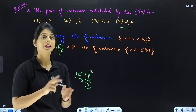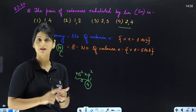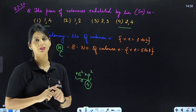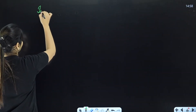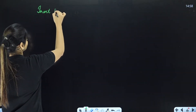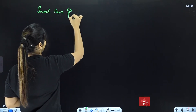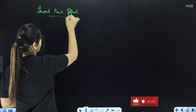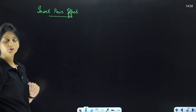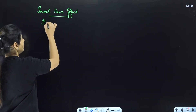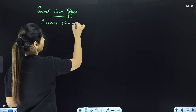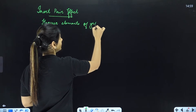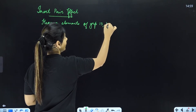Now, a very good concept is applied to select the second valence. That concept is called the inert pair effect. When does the inert pair effect apply? The inert pair effect applies to heavier elements of groups 13, 14, and 15.